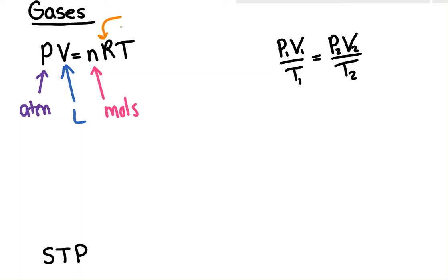R is the ideal gas constant. It has a lot of units associated with it. And then temperature has to be in Kelvin. Now in all of the gas laws, temperature has to be in Kelvin because Kelvin temperature is directly proportional to kinetic energy.